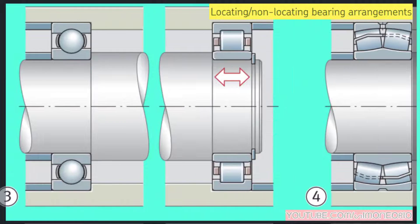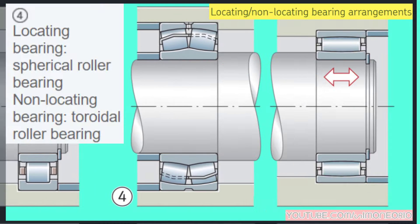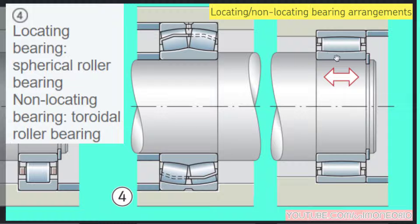The fourth example: the locating bearing is a spherical roller bearing, and the non-locating bearing is a toroidal roller bearing. The locating bearing is all blocked, and the non-locating bearing is also blocked in the housing, but can slide axially.